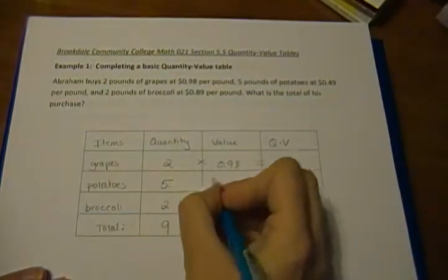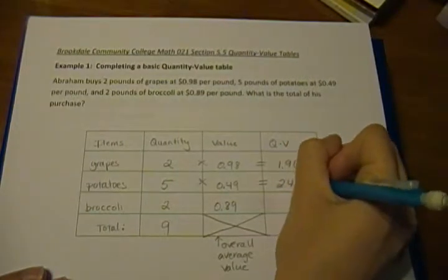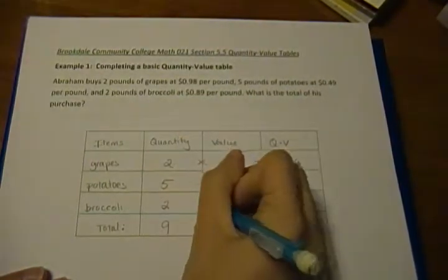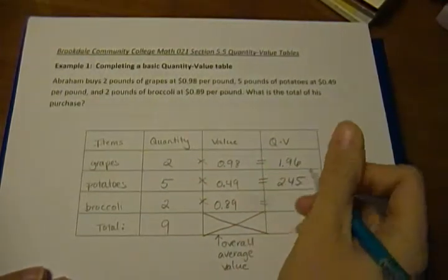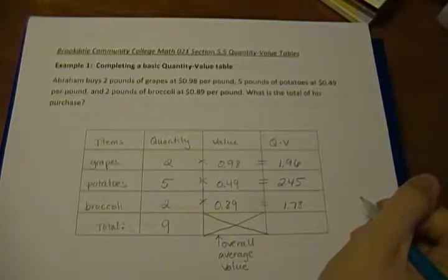It's going to be five times the forty-nine cents, which is two dollars and forty-five cents. And then our broccoli is two times eighty-nine cents, which equals a dollar seventy-eight.